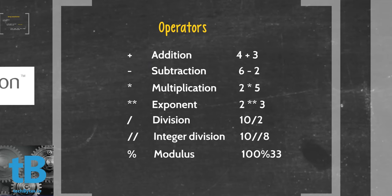Operators. These are the common mathematical operators that Python uses and many other programming languages, such as your addition, your subtraction. Here we use an asterisk as multiplication. For exponents, we use dual asterisks. For division, we have the division symbol. For integer division, we have the dual slash marks, and then our modulus, such as 100 modulus 33.